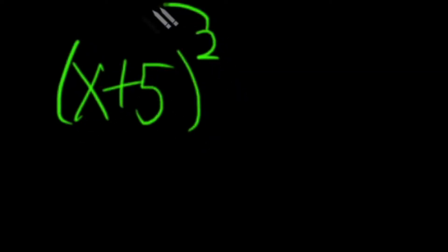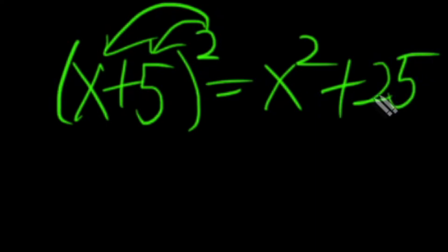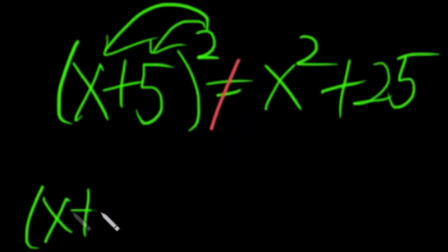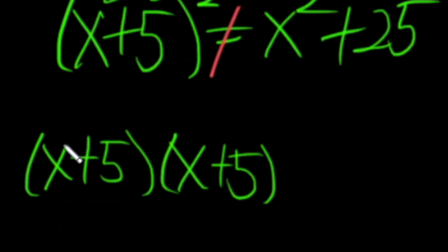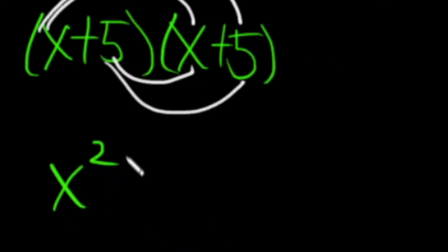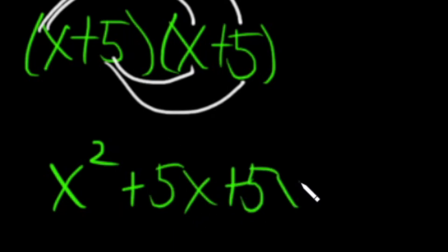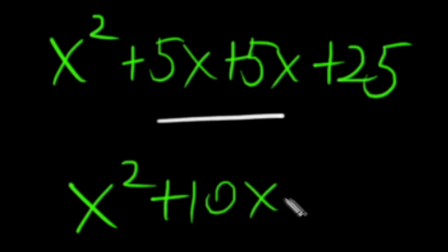Number 2. Say we have x plus 5, squared. Are you thinking to distribute the square into both parts, giving us x squared plus 25? It's close, but we're missing another term. Squaring something means to multiply it by itself, so it might be simpler to just write out x plus 5 twice. Now we have to use FOIL — multiply the first terms, the outer terms, the inner terms, and the last. x times x is x squared. x times 5 is 5x. 5 times x is another 5x. And then 5 times 5 is 25. We can combine the like terms and get the right answer: x squared plus 10x plus 25.